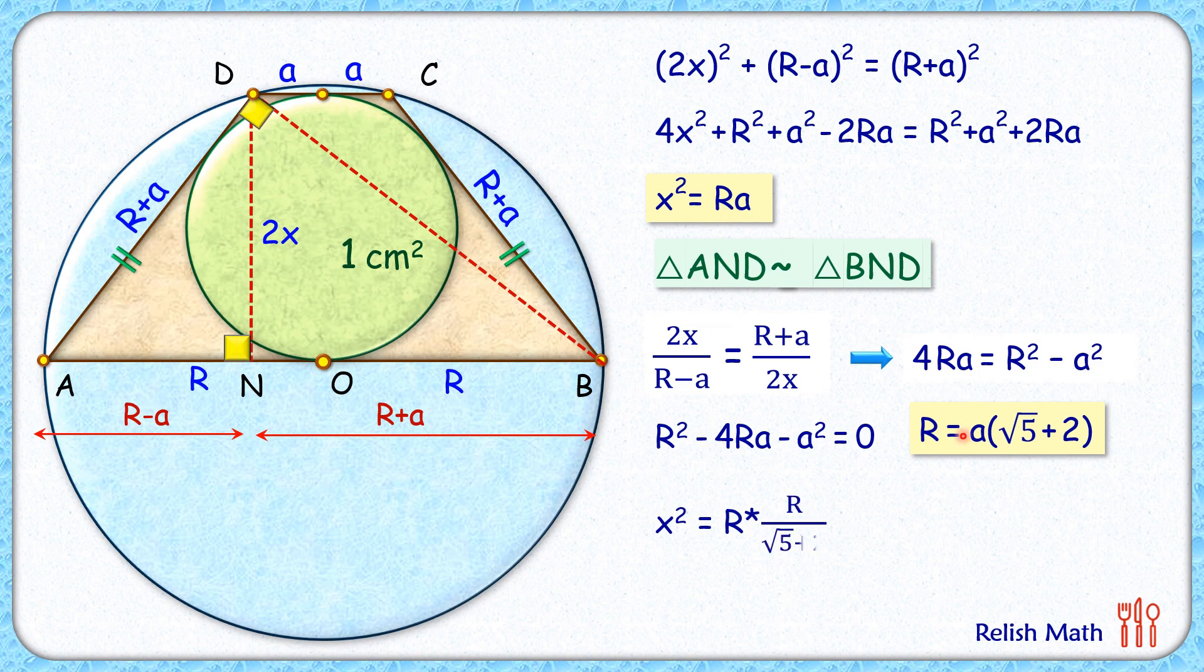So simplifying we'll get R² as x² times root 5 plus 2. Now multiplying with π on both sides, so πR² equals πx² times root 5 plus 2. But πx² that's nothing but the area of this green circle so that is 1, and πR² is the area of this blue circle or that's what we had to find. So area of the blue circle is 4.24 centimeter square and that's our answer. I hope you enjoyed the solution. I will see you in the next video, till then tata bye bye.